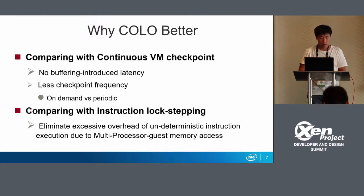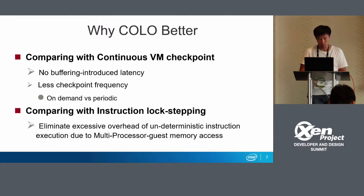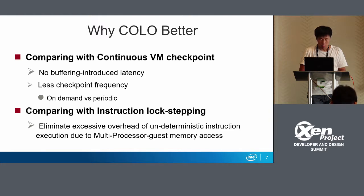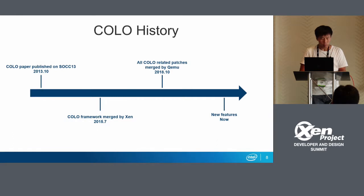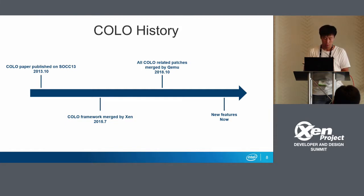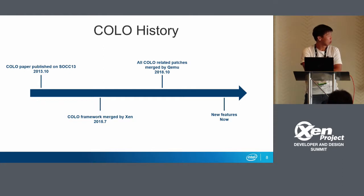For network applications, COLO's performance is very high compared to MicroCheckpoint or RAMOS. Compared to instruction lock-stepping, that's the old design which syncs the processor's instructions and has many issues. That's COLO's history. In 2013, the COLO paper was published at SOCC. In 2015, the COLO framework was merged by Xen, based on the Xen Live Migration and Xen RAMOS project.